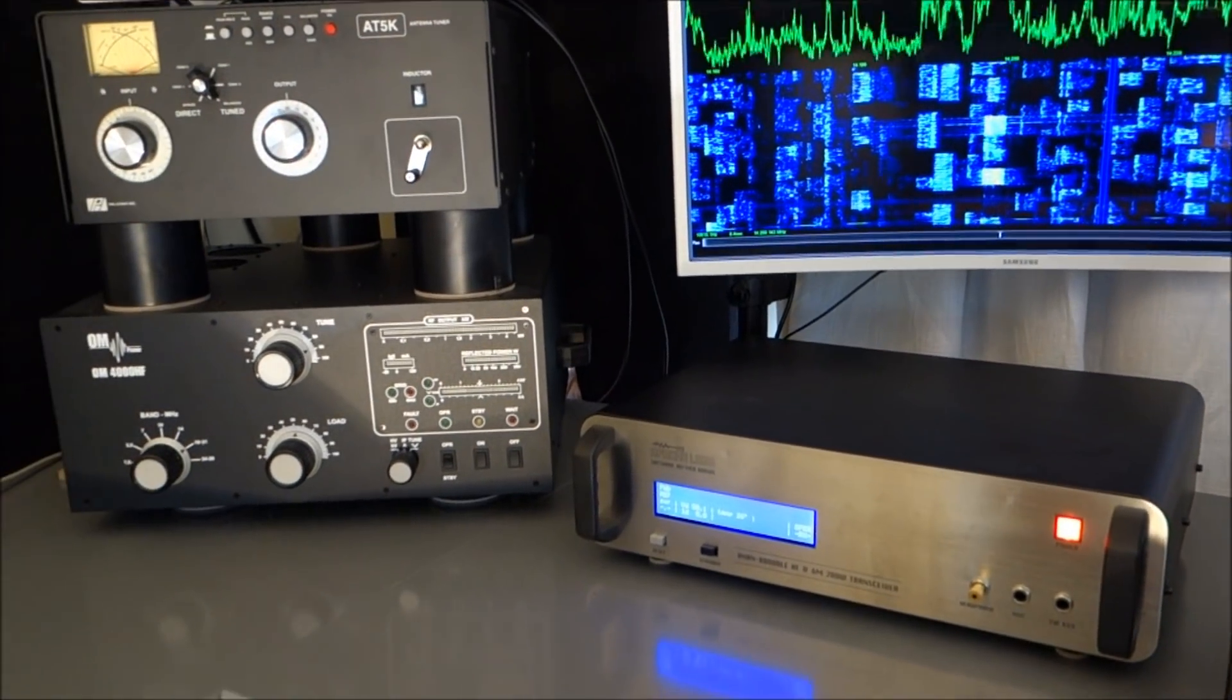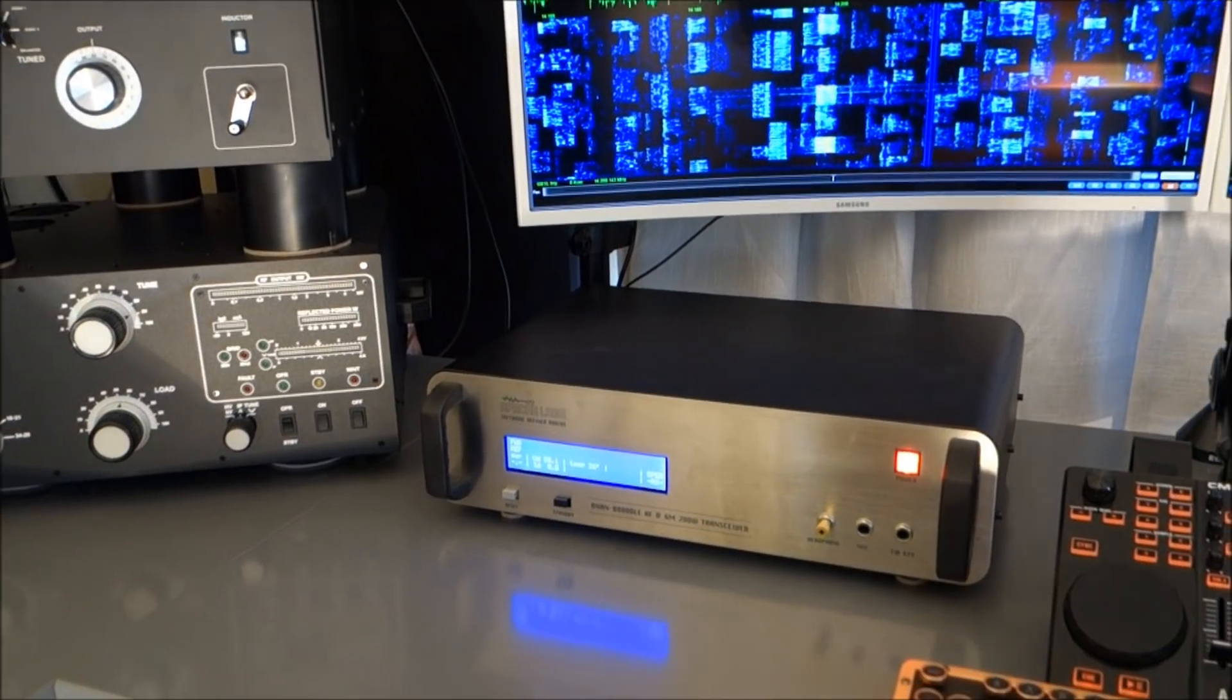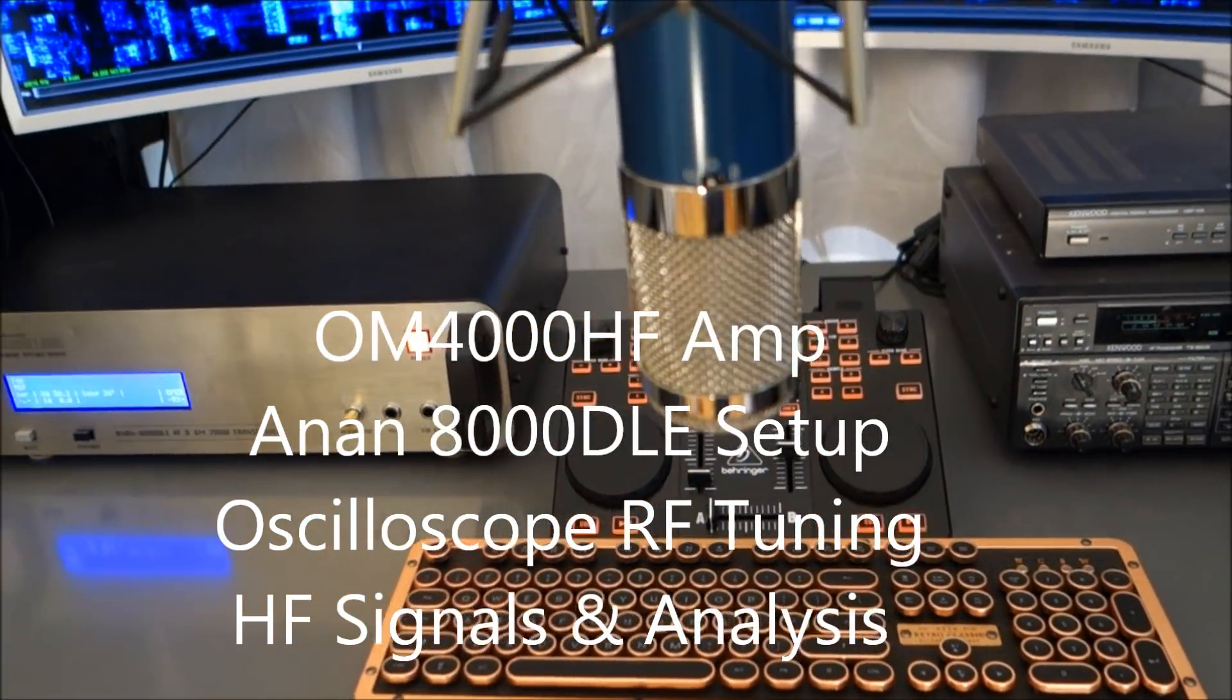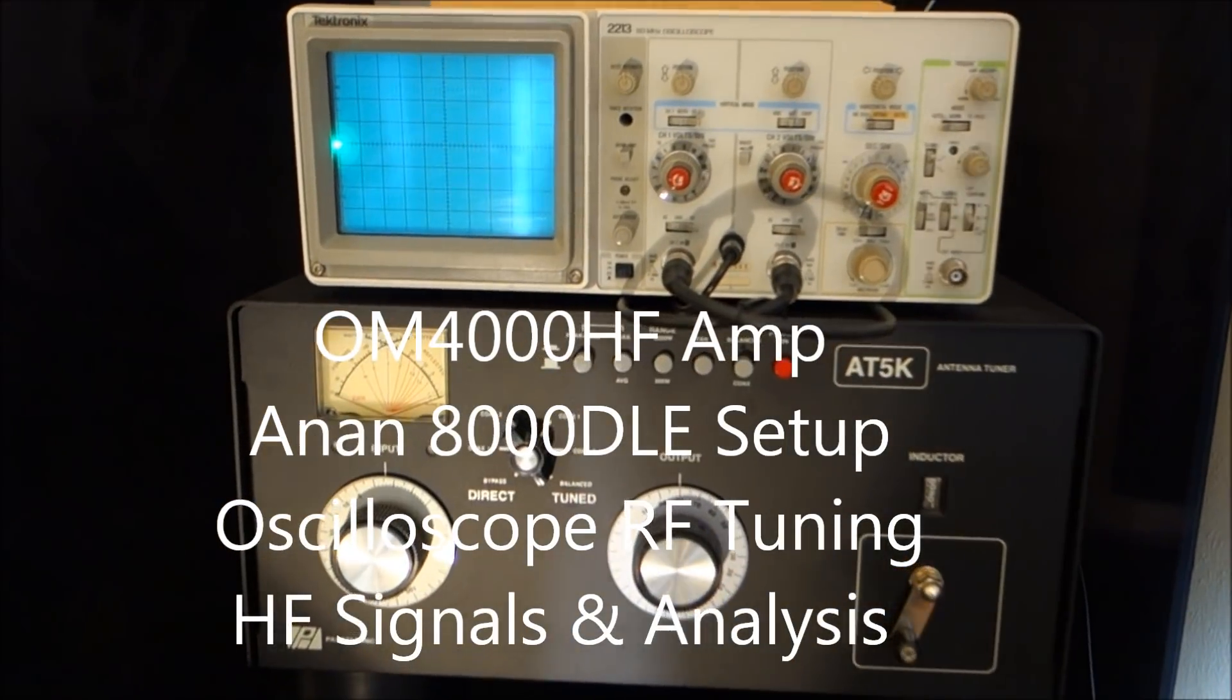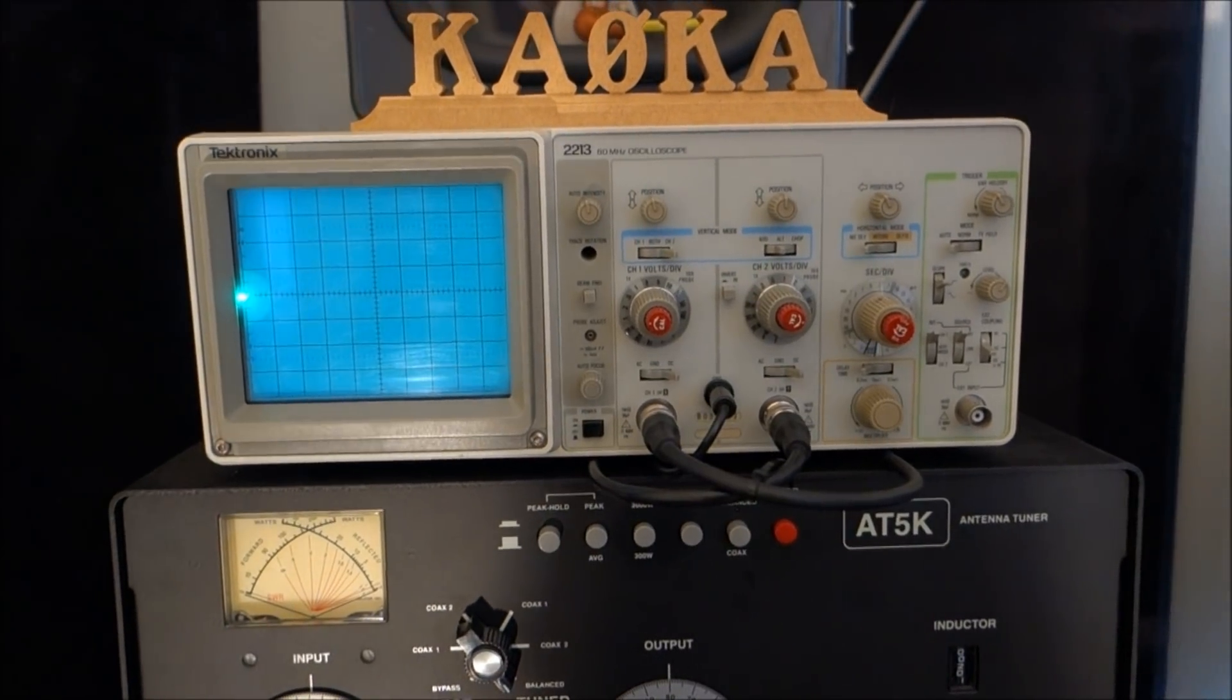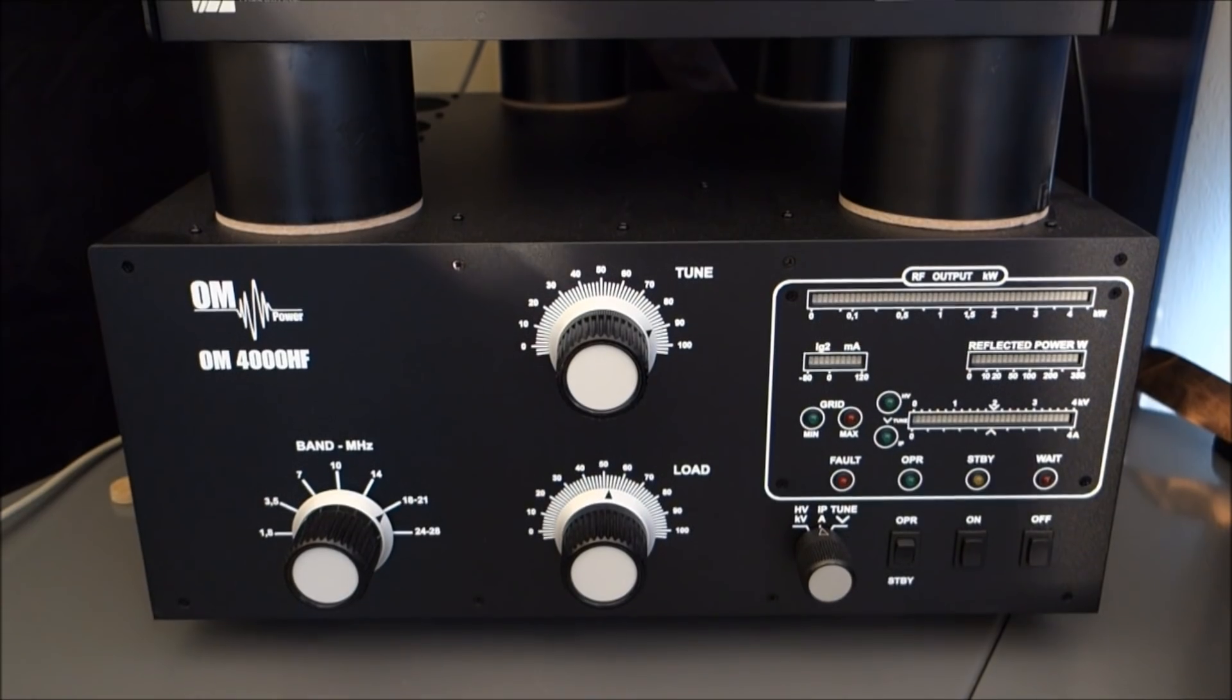In additional videos, I'll be demonstrating the OM4000. A lot more on the Anon 8000 there. The DJ controller for analog signaling, or the feel of analog signaling. And a lot more on how to use the oscilloscope to actually gauge and tune your signal on both AM and sideband so that you know that your system is in fact nice and linear.